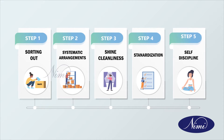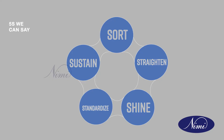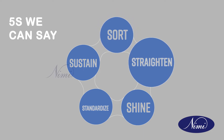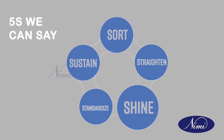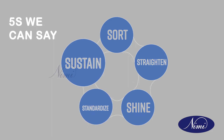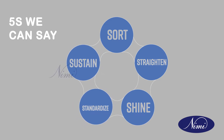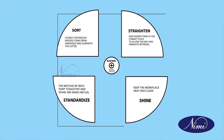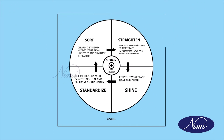The 5S can also be stated as: sort, straighten, shine, standardize, and sustain. There is a pictorial representation for these called the 5S wheel.